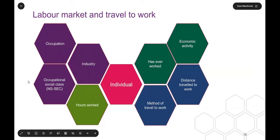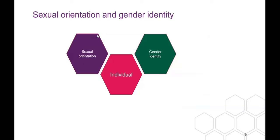For labor market and travel to work, at the individual level we get occupation, occupational social class, national socio-economic classification, industry, and the number of hours worked — so we can tell the difference between part-time and full-time workers. We also get whether somebody has ever worked, their current economic activity status — which includes students, retired people, people who are caring — and then method of travel to work and distance travelled to work. There's a note that the census was taken during lockdown, so this will be quite different to previous versions.